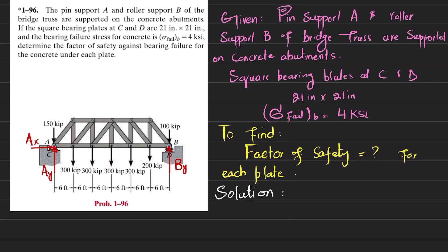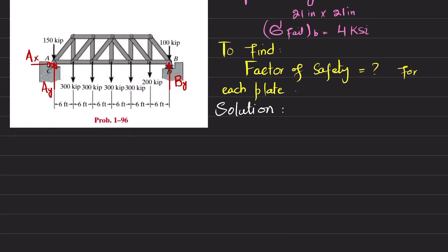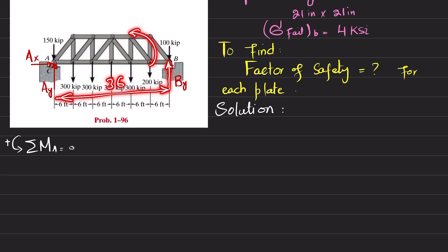We will apply equilibrium conditions to find these forces. The first equilibrium condition is that the sum of all moments about point A equals zero, taking counterclockwise moment as positive. About point A, the first moment is due to By, with a perpendicular distance of 36, producing a counterclockwise moment, so it is positive.